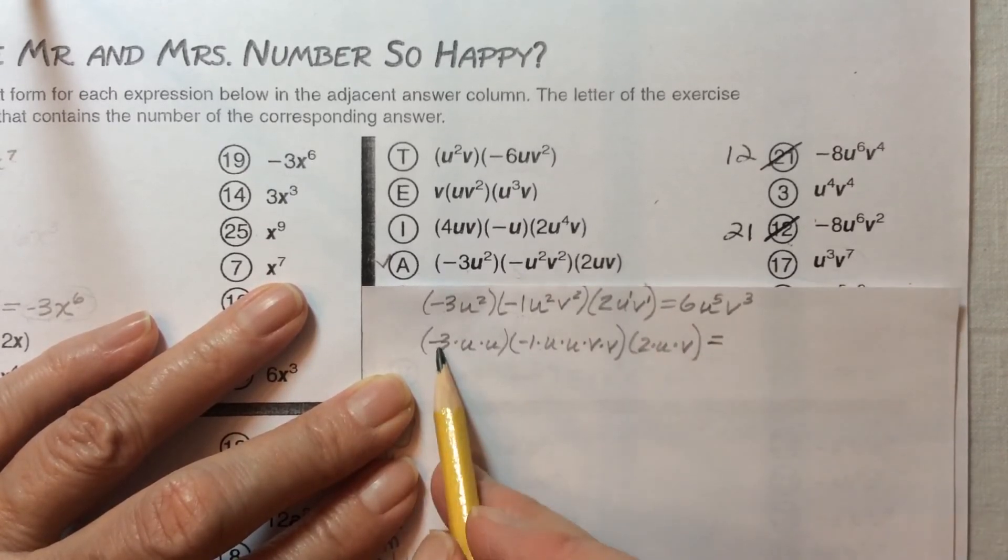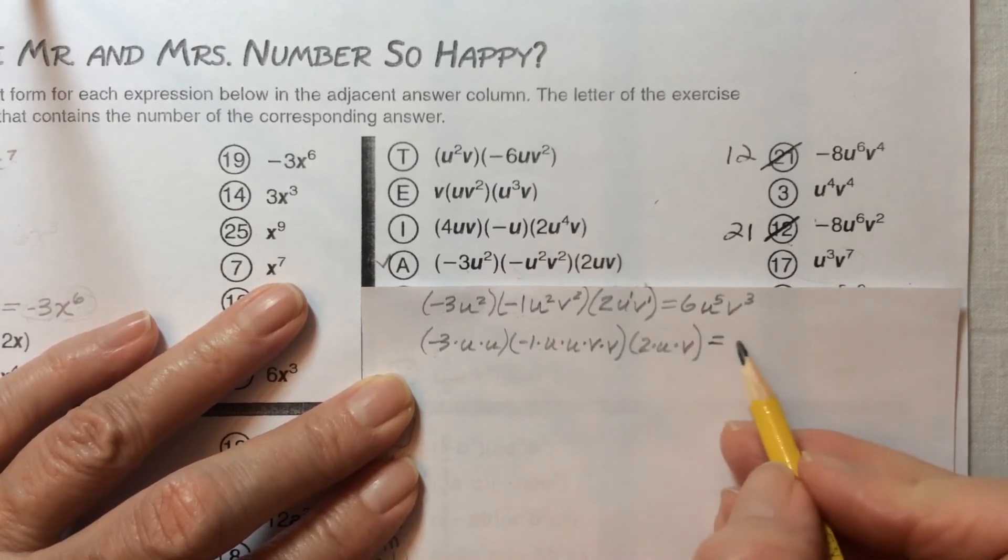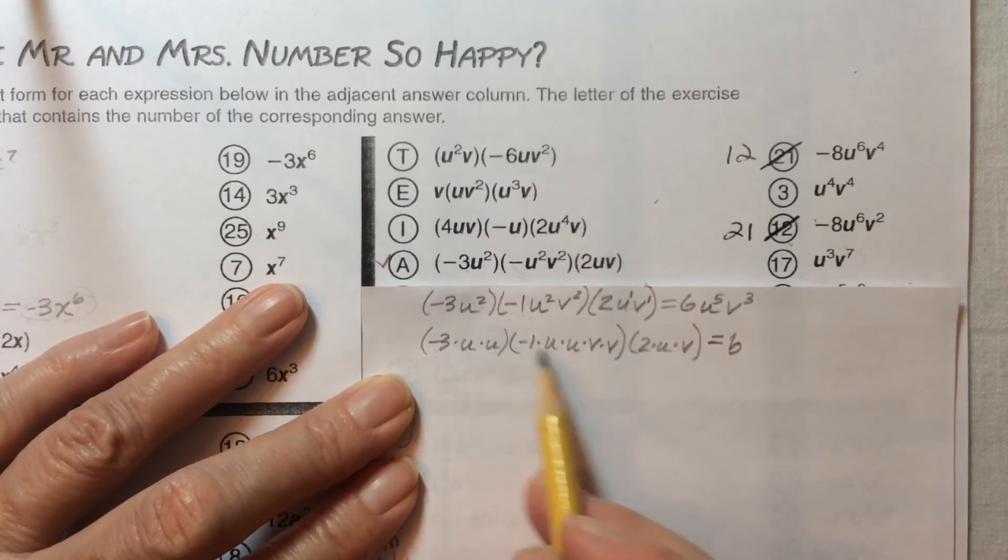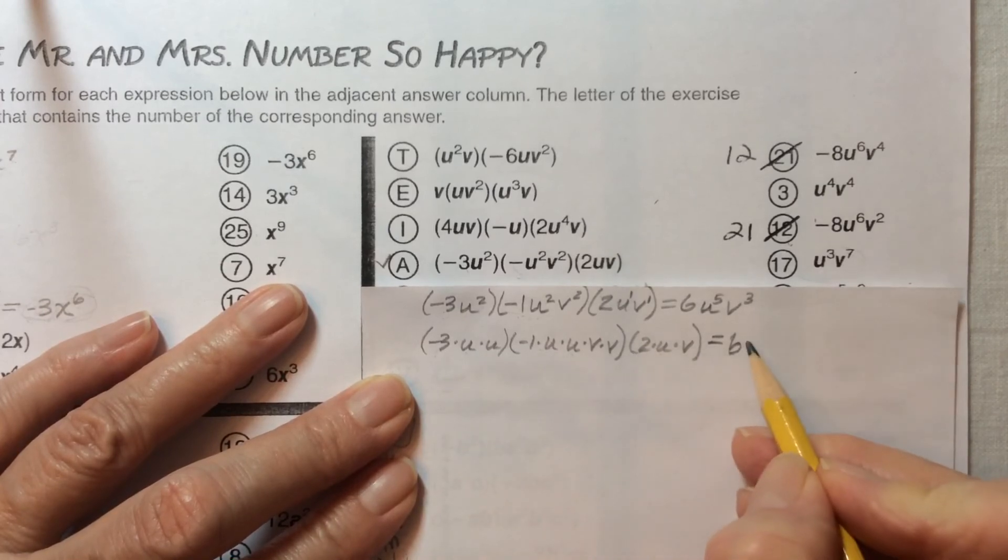We look at the coefficients separately from the variables. Negative 3 times negative 1 is positive 3, and positive 3 times 2 is 6. Then let's count up the u's: 1, 2, 3, 4, 5. Five u's multiplied together is u to the fifth power.